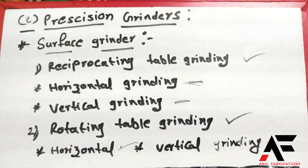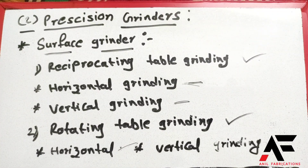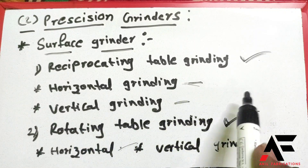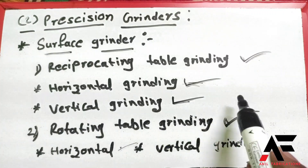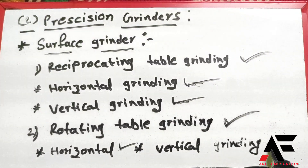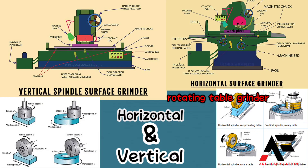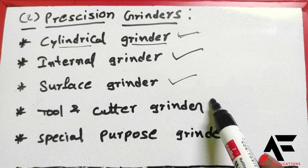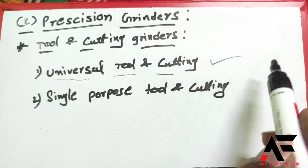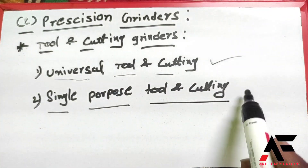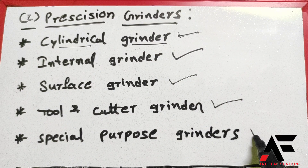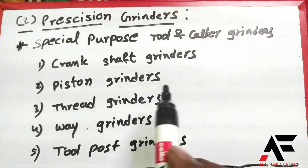Surface grinders are the next type. Additionally, there are tool and cutter grinding machines, also called special purpose grinders.